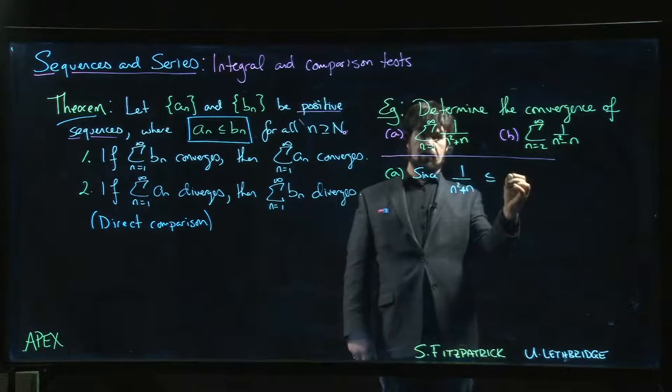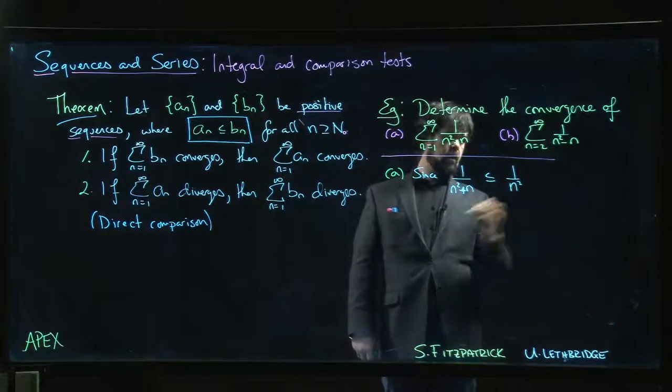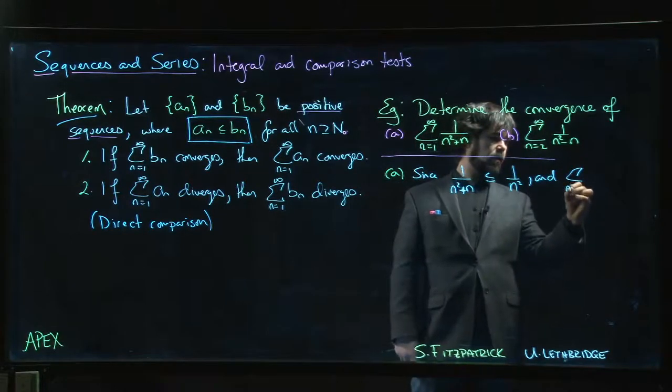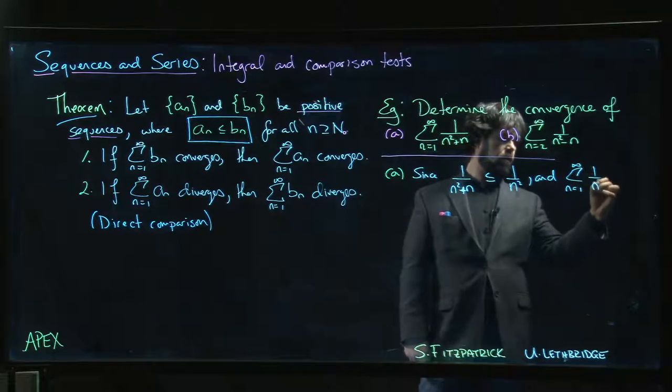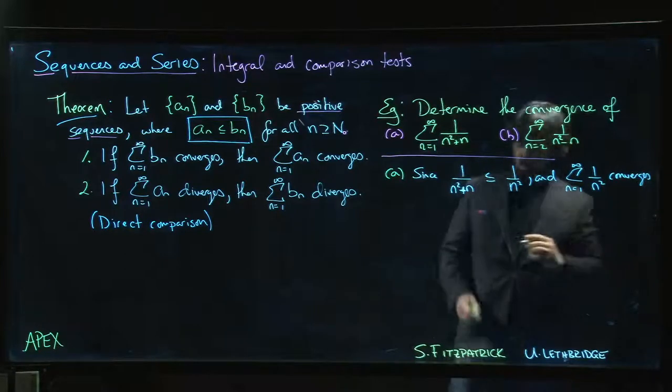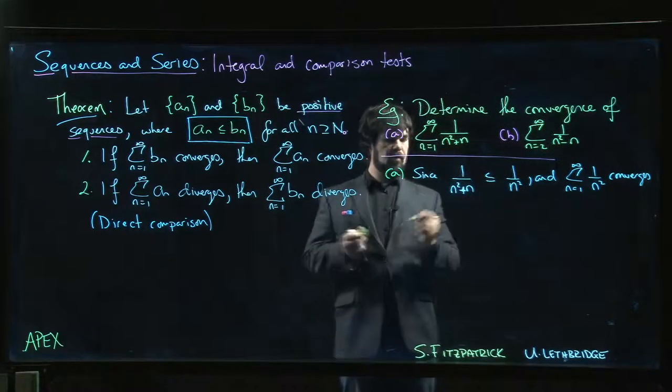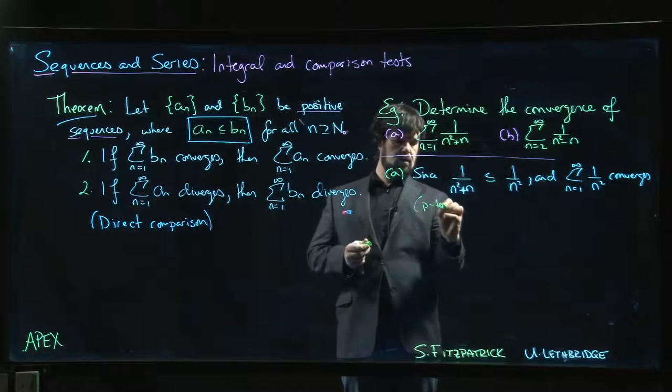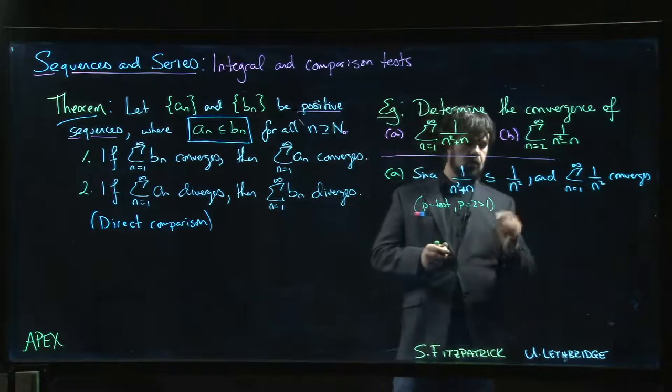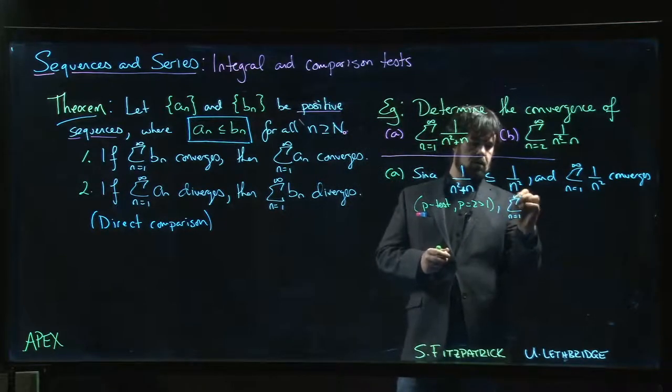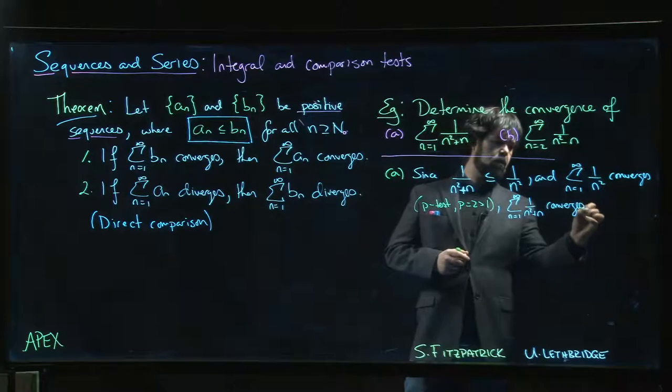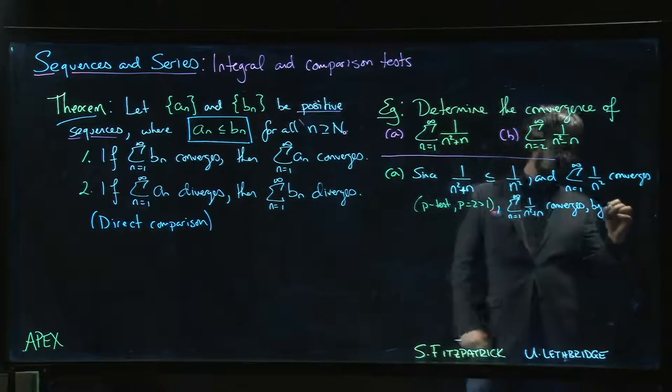But I want to keep the one that gives me a convergent series, so 1/n². This series converges because it's a p-test with p = 2, which is bigger than 1. We know that this series converges as well, and we can give the reason: converges by comparison.